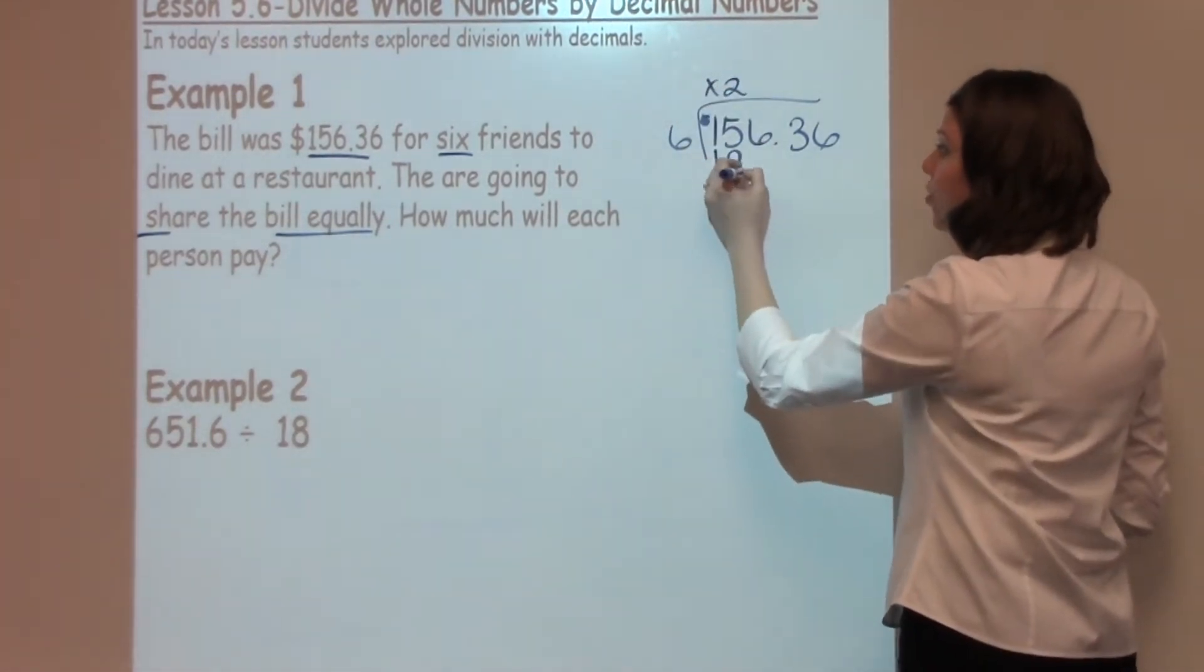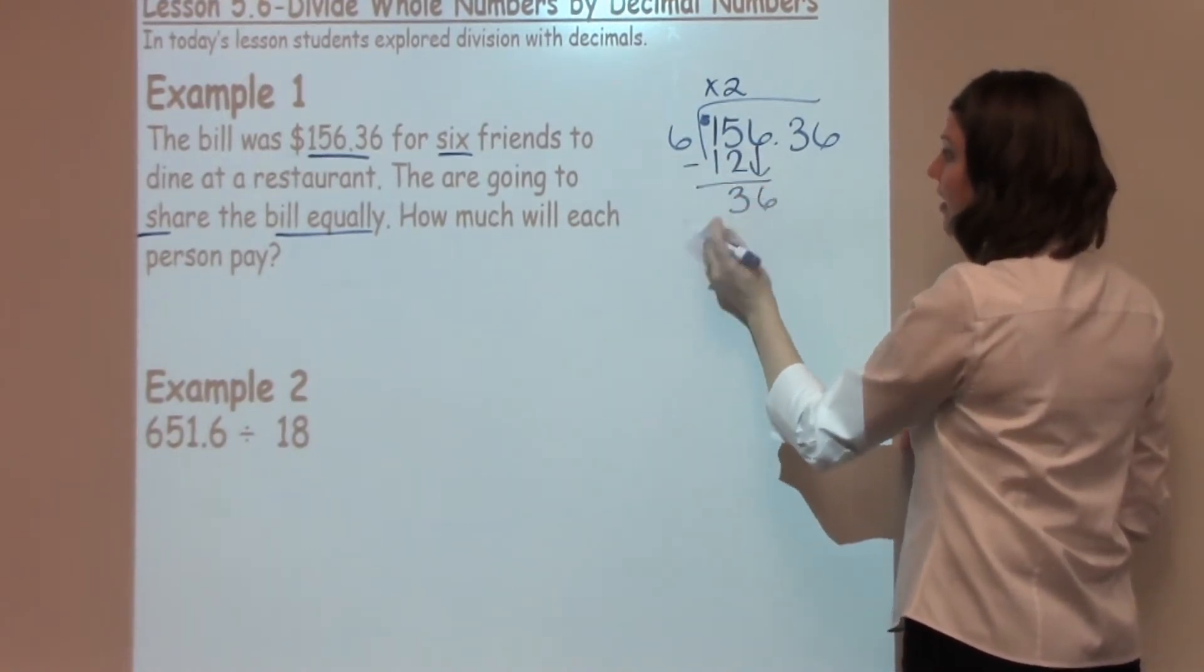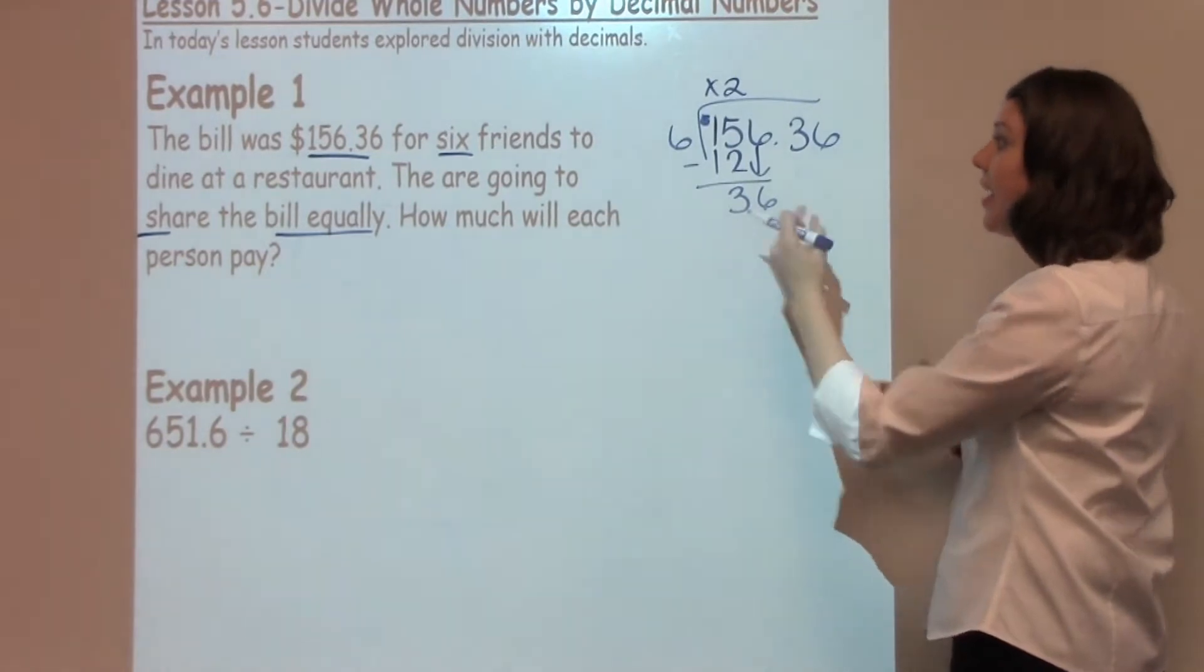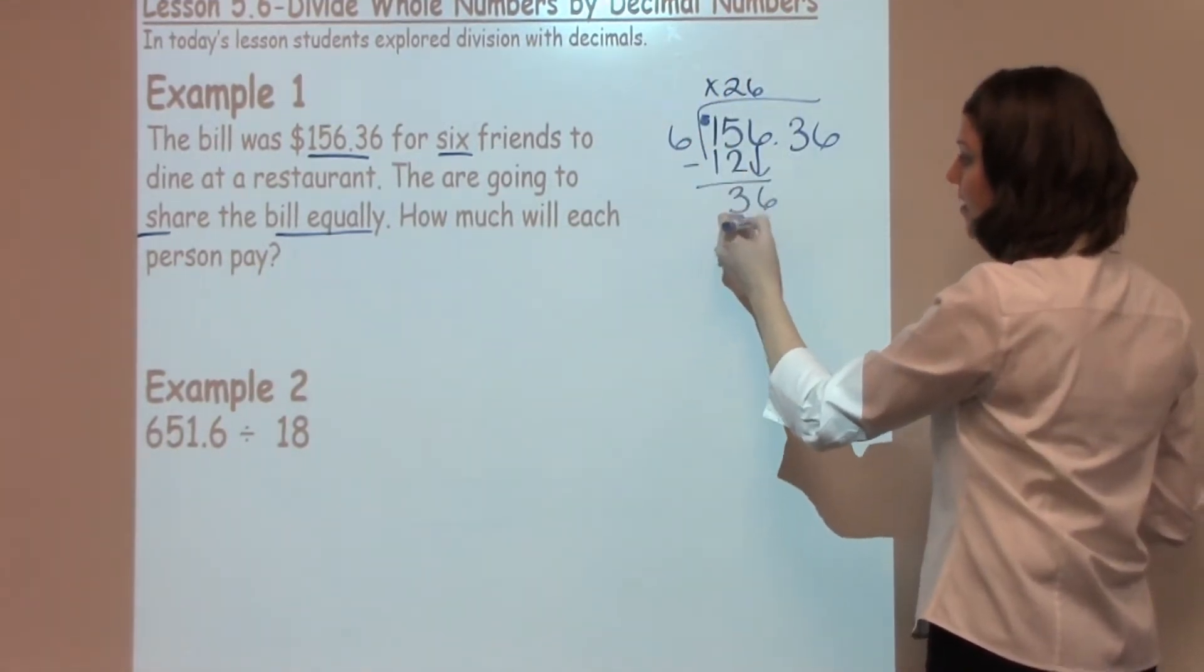Six times two is twelve. When I subtract, I have three, bringing down my six. Can six go into thirty-six? It can. It goes in there six times. Six times six is thirty-six.